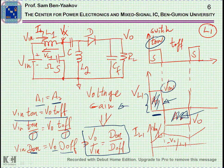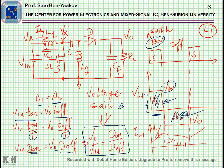That's it. We understand that the SEPIC converter has a voltage gain equal to D_on over D_off, which is very nice because it implies that the gain can be higher or lower than one. If D_on equals D_off — both 0.5 — the gain is one. If D_on is 0.7 and D_off is 0.3, the gain is larger than one. If D_on is 0.3 and D_off is 0.7, the gain is lower than one. So this converter has the very important feature of being able to be an up and down converter — you can get a voltage which is lower or higher than the input.